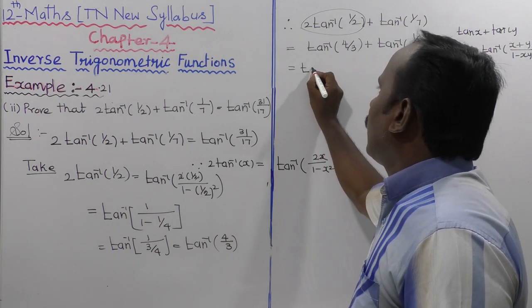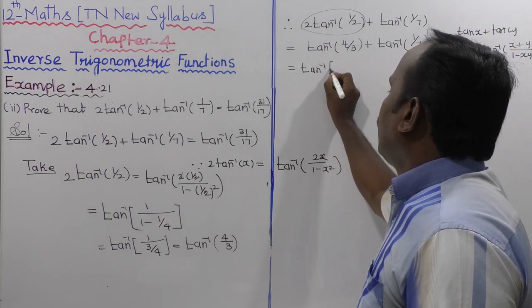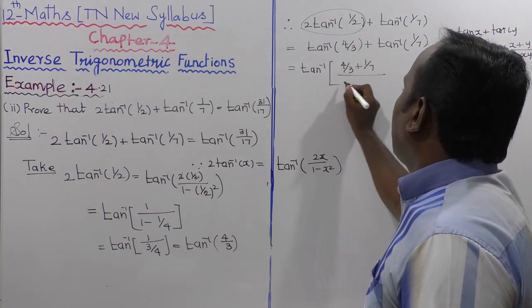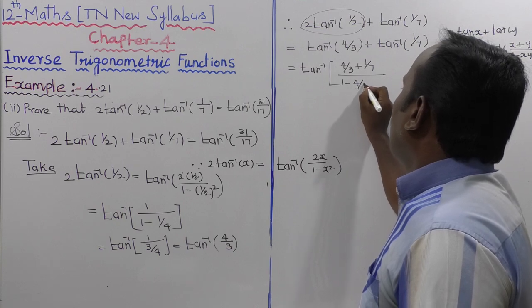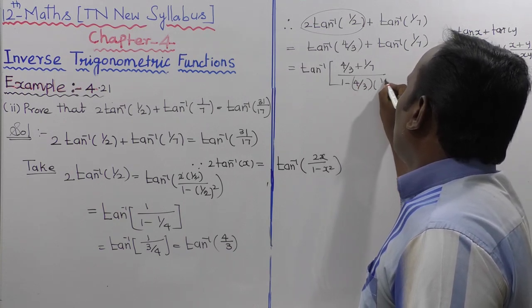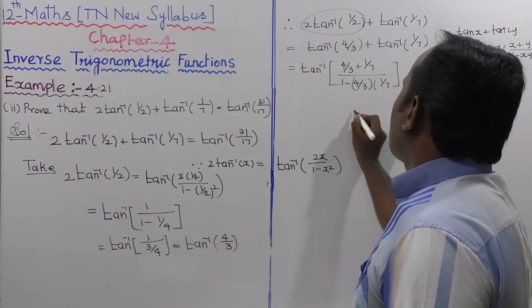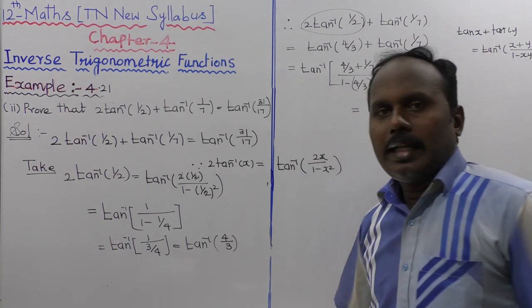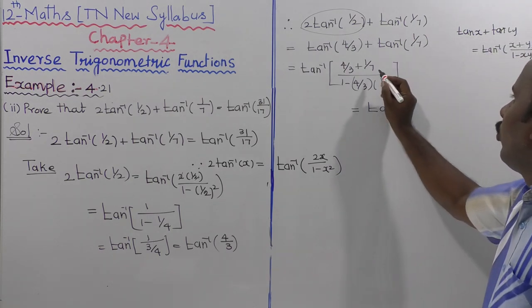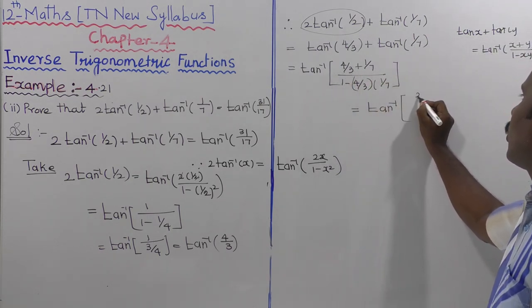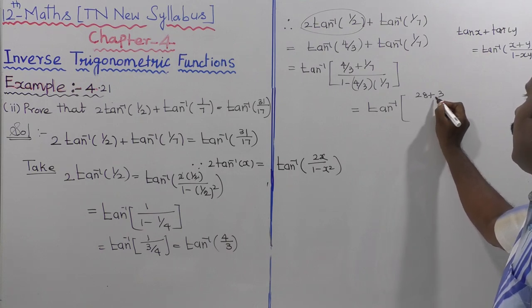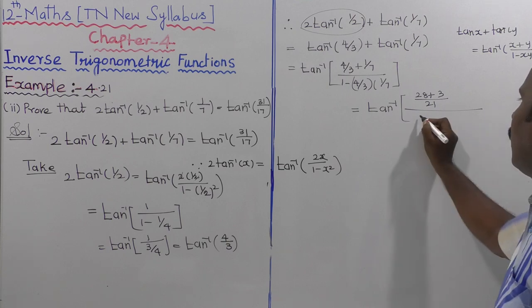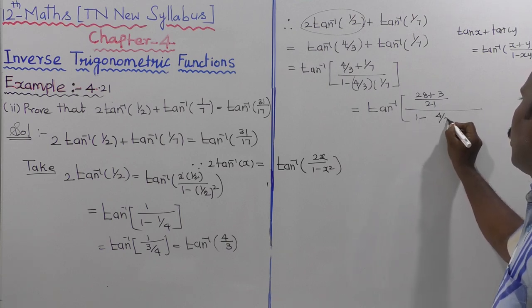So this is equal to tan⁻¹ of (4/3 + 1/7) divided by (1 − (4/3)·(1/7)). The numerator: 4/3 + 1/7 = 28/21 + 3/21 = 31/21. The denominator: 1 − 4/21.